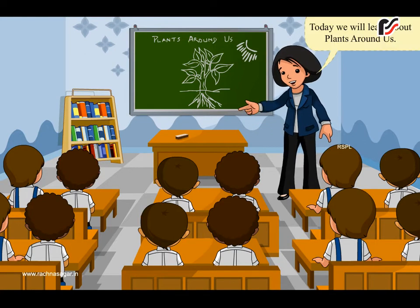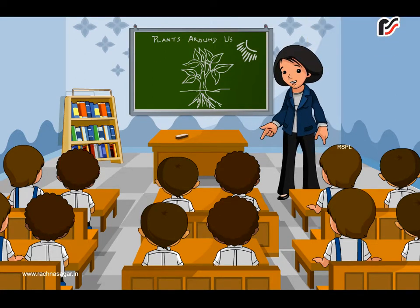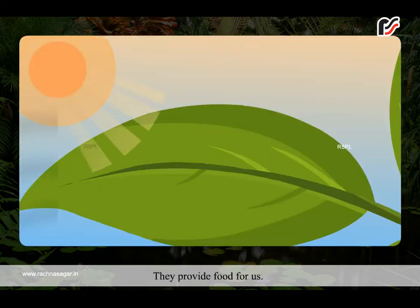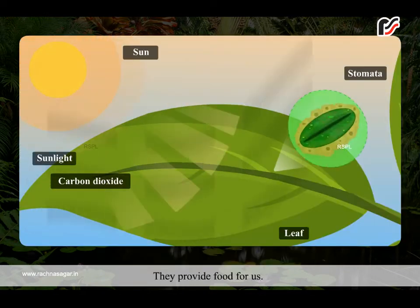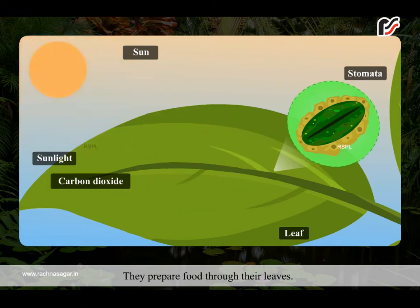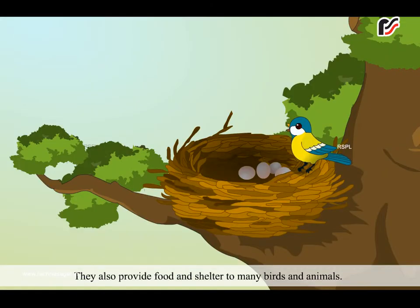Hello children, today we will learn about plants around us. Plants are important in our life. They provide food for us. They prepare food through their leaves. They also provide food and shelter to many birds and animals.